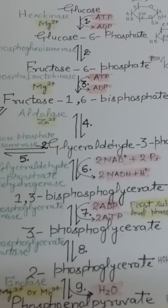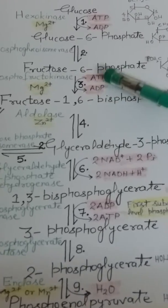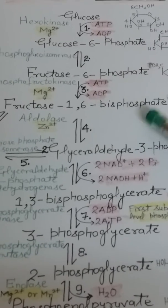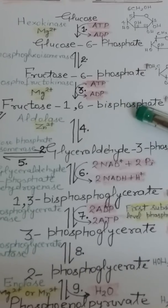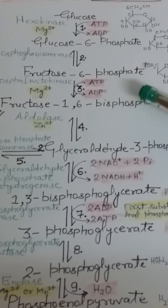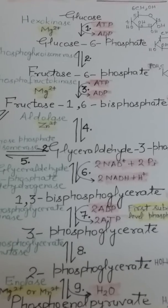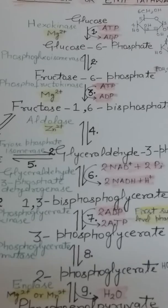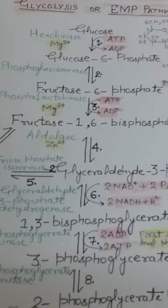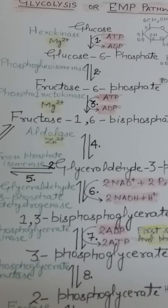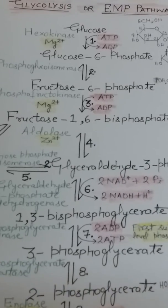The third step is also phosphorylation. Fructose-6-phosphate is phosphorylated by ATP to form fructose-1,6-bisphosphate. In fructose-6-phosphate there is only one phosphate group, and in fructose-1,6-bisphosphate there are two — the additional phosphate is derived from ATP. This irreversible reaction is catalyzed by the allosteric enzyme phosphofructokinase, which requires magnesium ions for its activity.